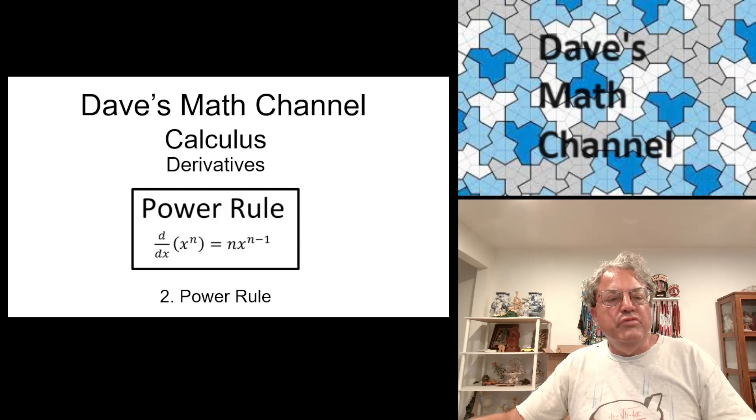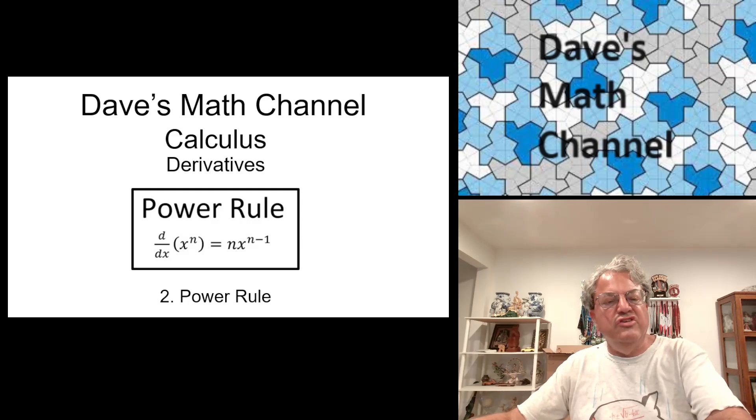Hi everyone, welcome back to Dave's Math Channel. I'm your host David Tehr and this is my second video in my sub-series on derivatives of calculus. Today I'm going to talk about the power rule. I'm going to derive the power rule, which is a very important rule in differentiation, differential calculus. It says that the derivative of x to the nth power is equal n times x to the n minus first power, where n is an arbitrary non-negative integer. Let's begin.